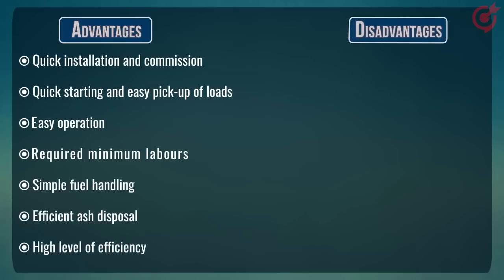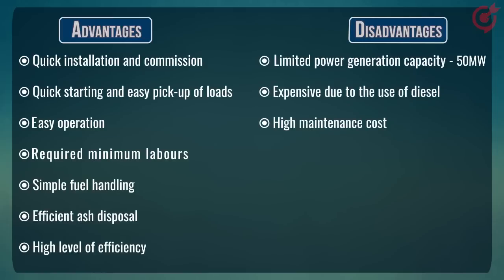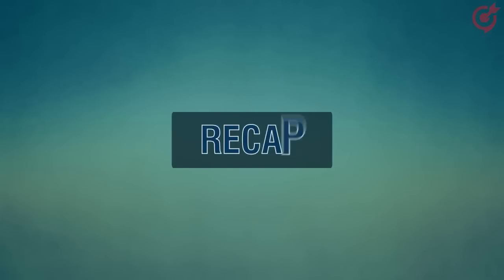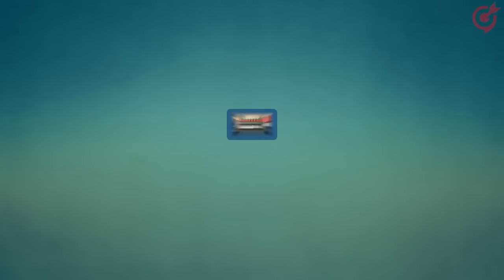Disadvantages: the power generation capacity of these power plants is limited to about 50 megawatts. It is expensive as diesel fuel costs more compared to coal. Maintenance cost of a diesel power plant is also very high, and the life of these power plants is relatively short. In this lesson, you learned about the different systems of a diesel power plant, how it works, and its advantages and disadvantages.